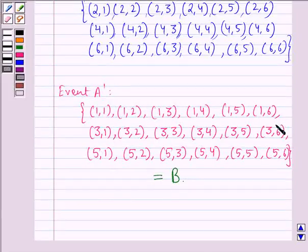In all these sample points, we see that on the first die we are getting an odd number. So, this is the same as event B. So, this is our answer to the question.